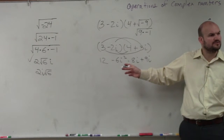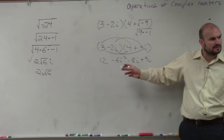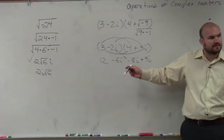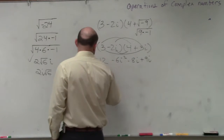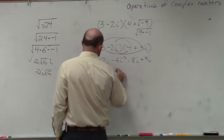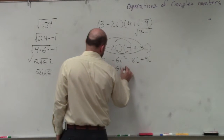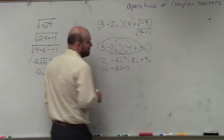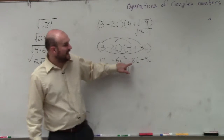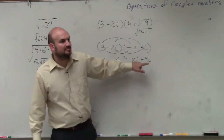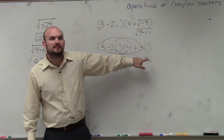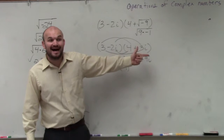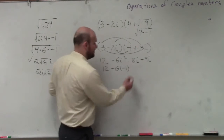Brian, what does i squared represent? Negative 1. Thank you. So 12 minus 6 times negative 1. Then what's negative 8i plus 9i? 1i. 1i, right?